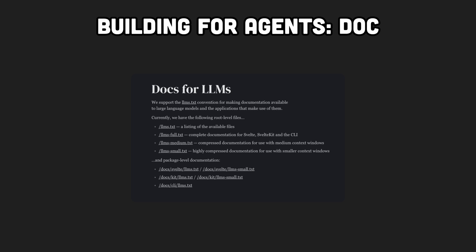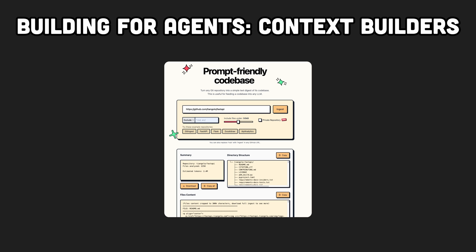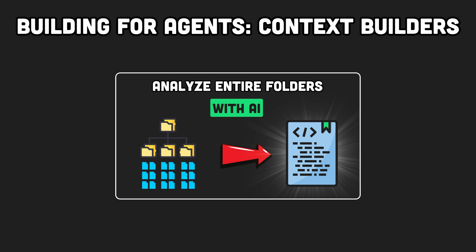Not only do you have to put your documentation in a Markdown file, you also have to adapt the content for LLMs. For instance, instead of using 'click here' as you do in human documentation, you would replace it with the curl command that triggers the same action, so an agent can do it easily. Finally, you have context builders like git ingest, which produces one file that describes all the different files and their content in your code repository.